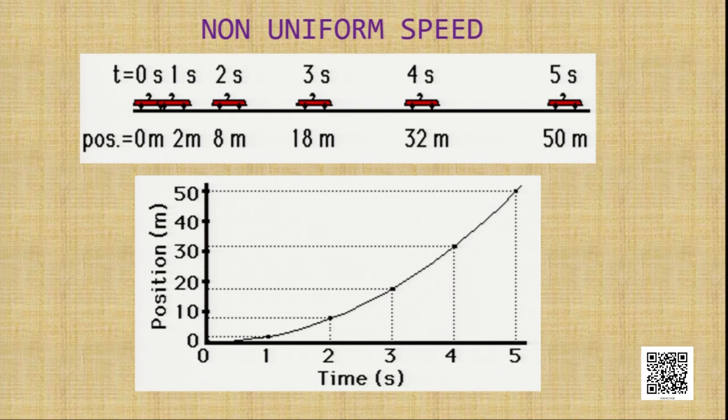If you plot these points on the graph, taking time on the x-axis and position on the y-axis, in this case you find a curve. It is not necessary that it will always be a curve — it can be a zigzag line. So the graph for an object executing non-uniform motion is a zigzag line or a curve. The difference: uniform motion gives a straight line; non-uniform motion gives a curve or zigzag line.